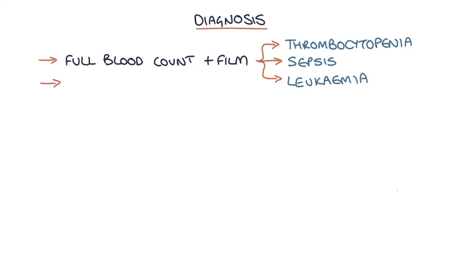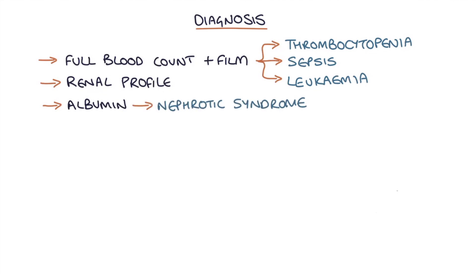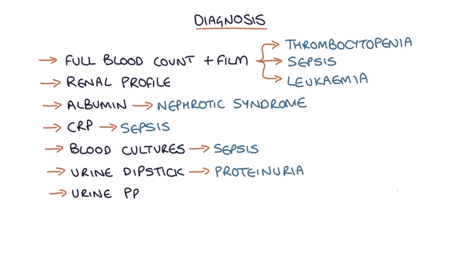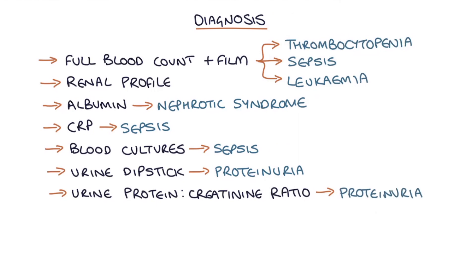Further investigations include a renal profile for kidney involvement, serum albumin for nephrotic syndrome, CRP for sepsis, blood cultures for sepsis, urine dipstick for proteinuria, a urine protein-creatinine ratio to quantify proteinuria, and blood pressure to check for hypertension.